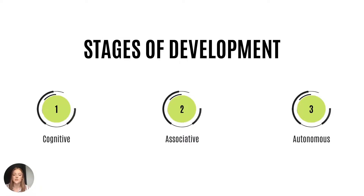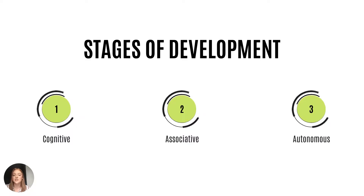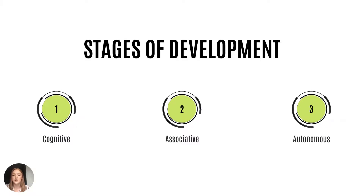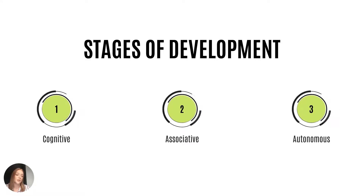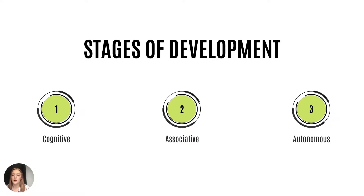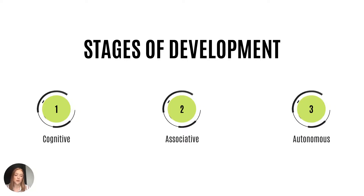Finally, comes the autonomous stage. In this stage, the skill is automatic, so to find out if the athlete has actually reached this stage, you can ask them questions like, why did you do that, or what went wrong, and they should be able to give you the correct response.